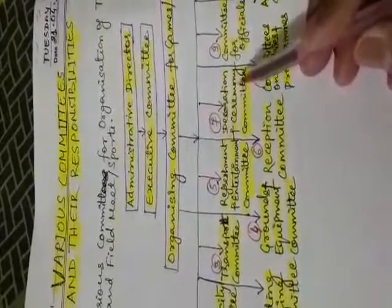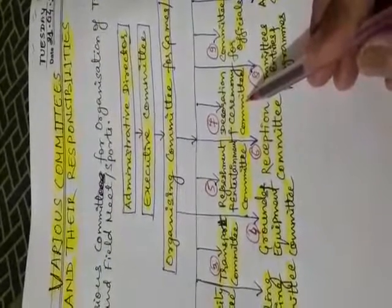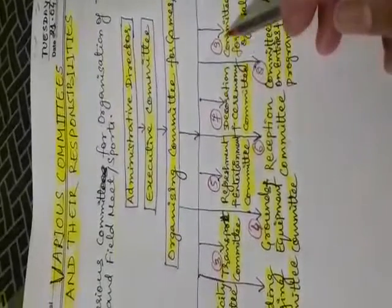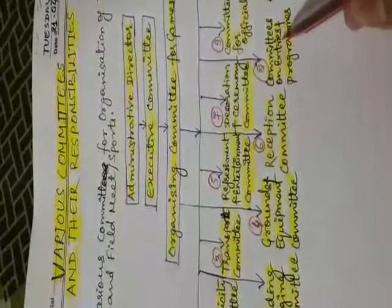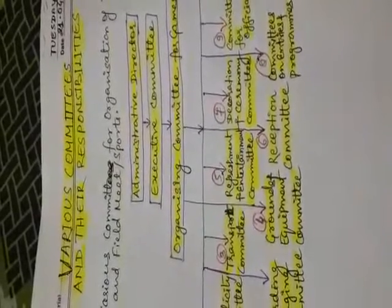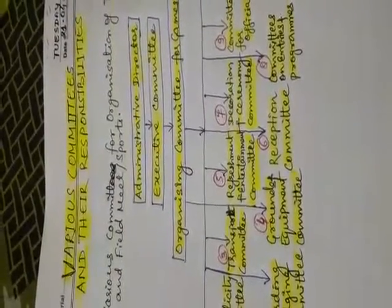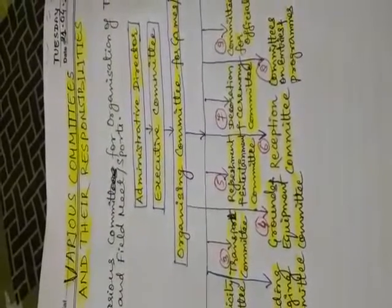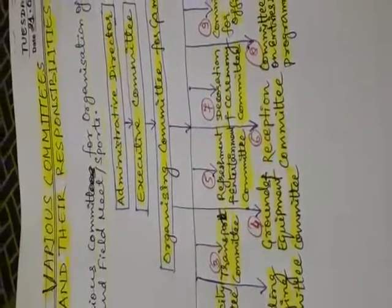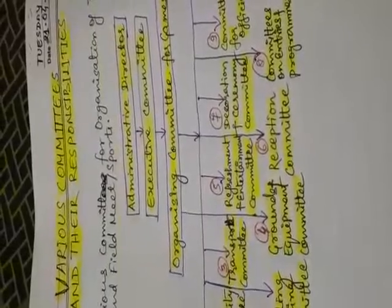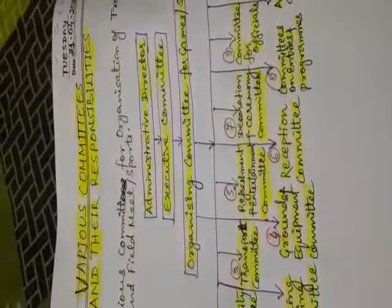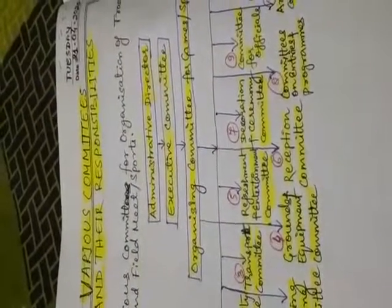This committee also makes arrangements for trophies, medals and certificates. The 8th one is the committee on entries and programs. This committee sends entry forms to various institutions early and receives them in time, allots numbers to the competitors, and arranges seats for guests and spectators. It prepares the complete program related to games and sports events and gets it printed.